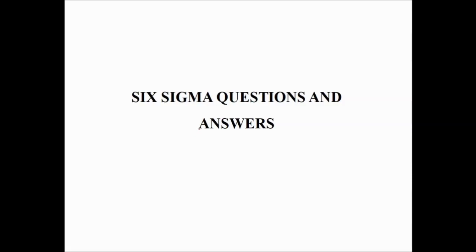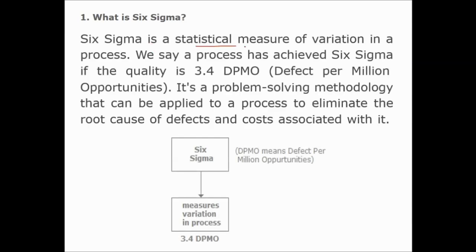Let us look at a few questions and answers in Six Sigma, as these are generally asked. What is Six Sigma? Six Sigma is a statistical measure of variation in processes. A process has achieved Six Sigma if the quality is 3.4 DPMO — defects per million opportunities. It is a problem-solving methodology that can be applied to a process to eliminate the root cause of defects and costs associated with it.